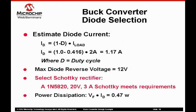The diode's average current is equal to the load current times the portion of the time the diode is conducting. The time the diode is on is 1 minus the duty cycle. The maximum reverse voltage on the diode is VIN, which is 12 volts in this example. The current and voltage ratings are low enough that a small Schottky diode can be used. By using a Schottky diode, switching losses are negligible. The forward voltage drop for the selected diode is about 0.4 volts at the peak current of 2 amps, and the estimated diode power dissipation is 0.47 watts.